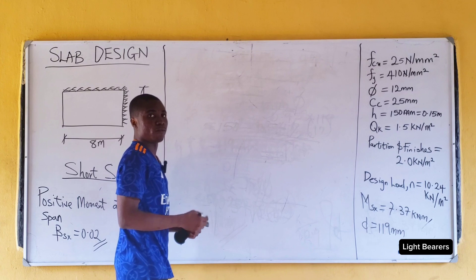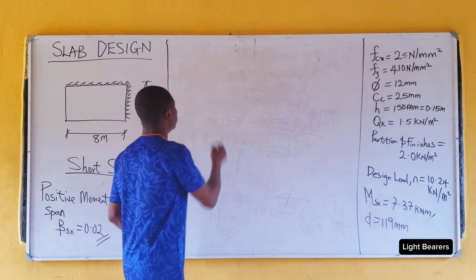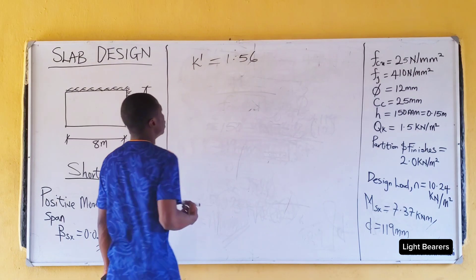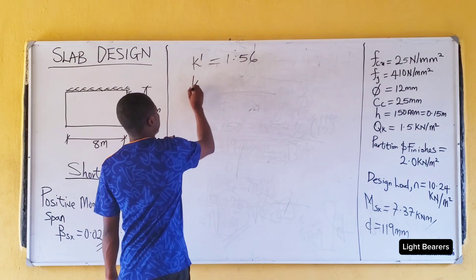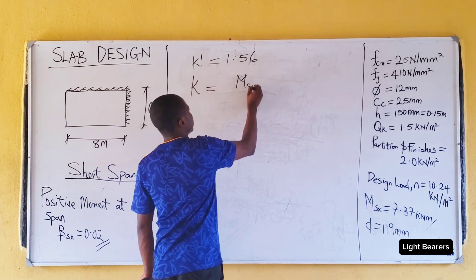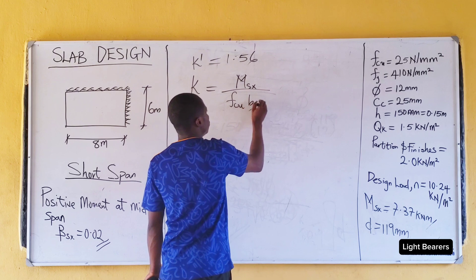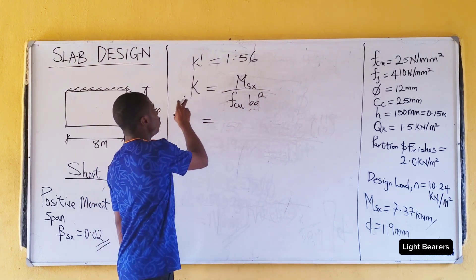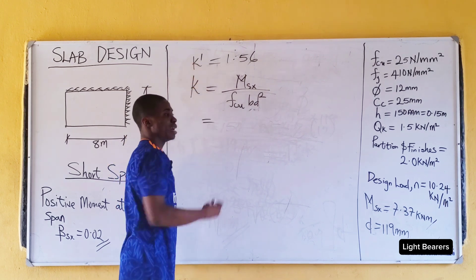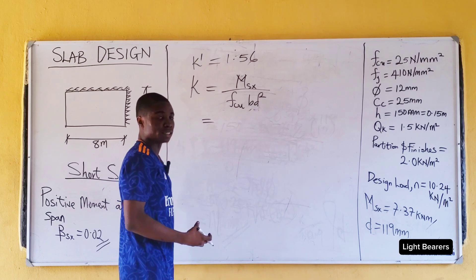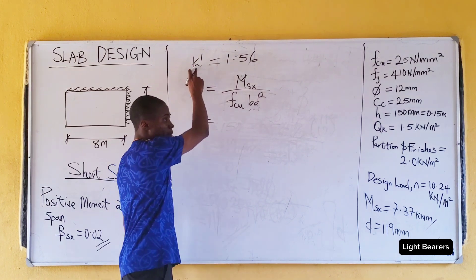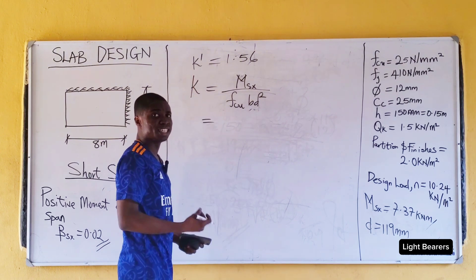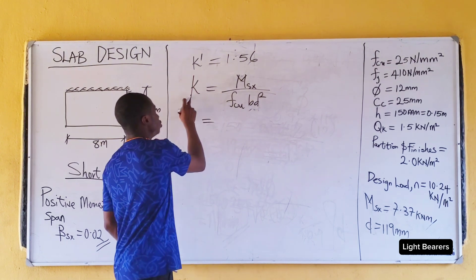In clause 3.4.4.4 of the BS code, k prime equals 1.56. Now let's find k. k equals msx all over fcu times b times d squared. Note: if the value of k is greater than k prime, that means compression reinforcement is required, so we will continue with k prime. But if the value of k is less than k prime, that means compression reinforcement is not required, so we will continue with k.